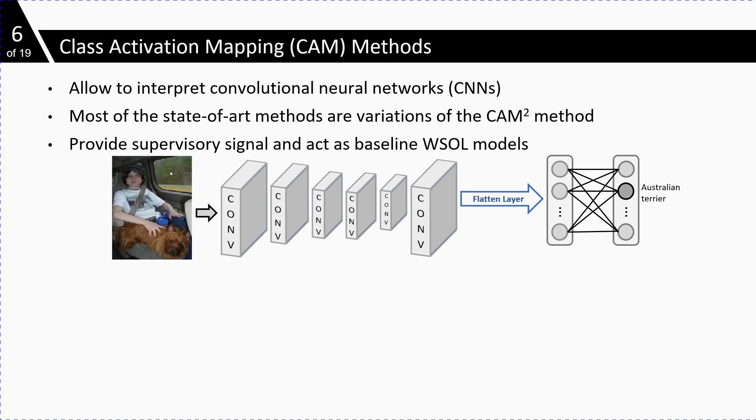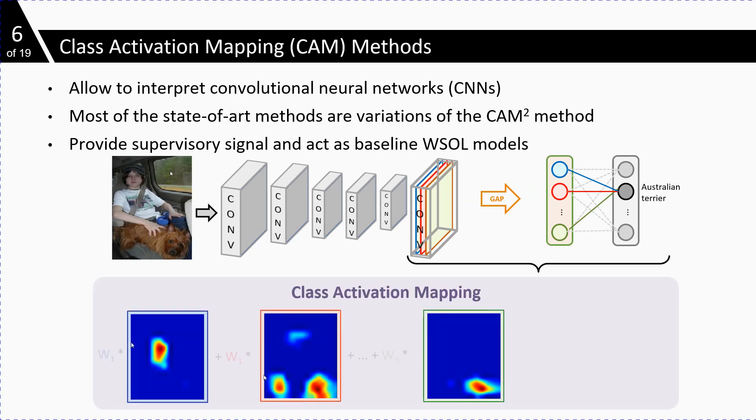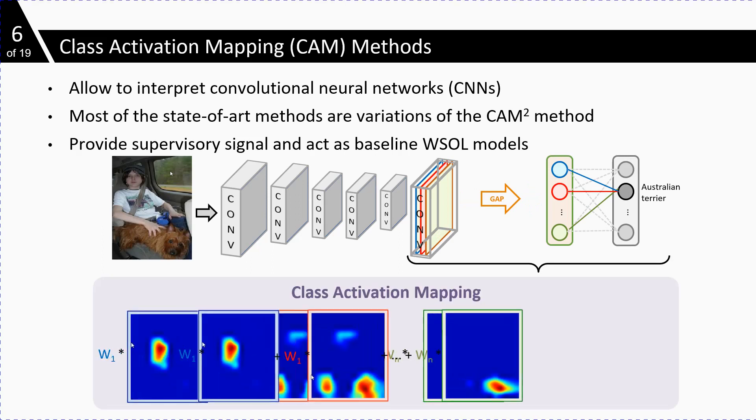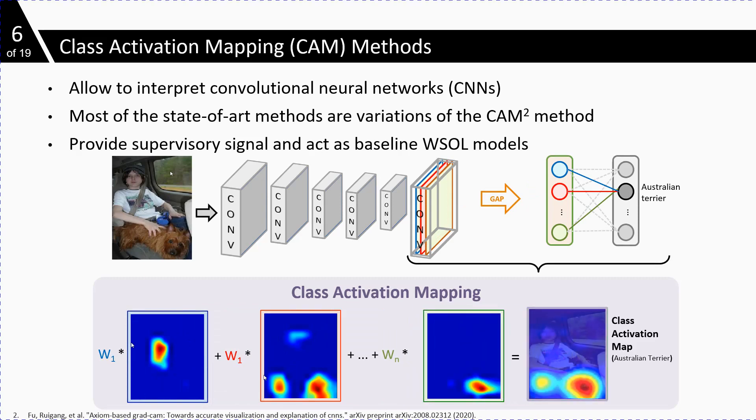To obtain CAM from a classification network, we have to replace the last flattened layer with the global average pooling layer. During forward pass, we multiply the weights of the last layer with the output of the last convolutional layer to produce a single weighted average map that is known as the activation map.